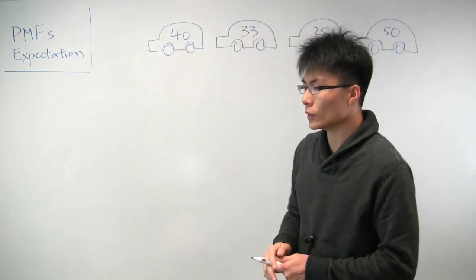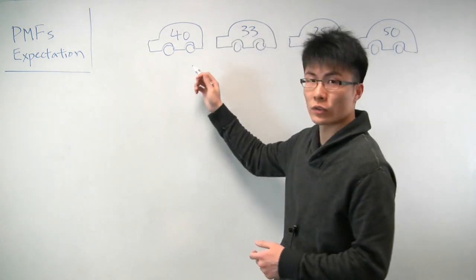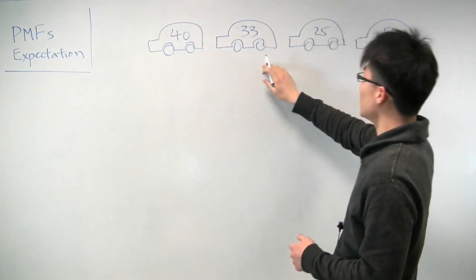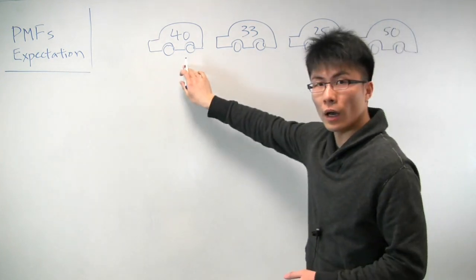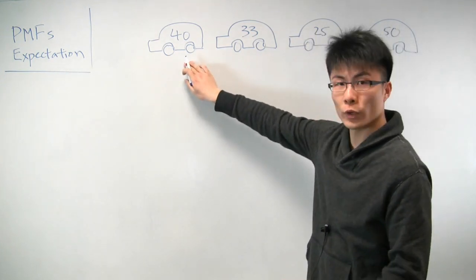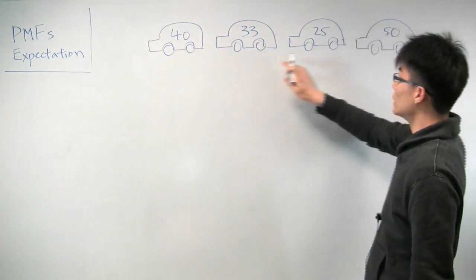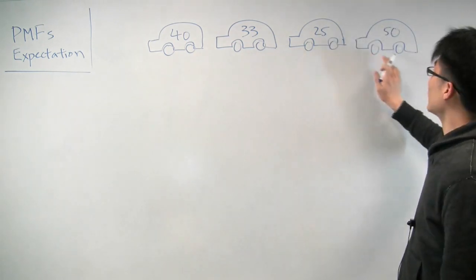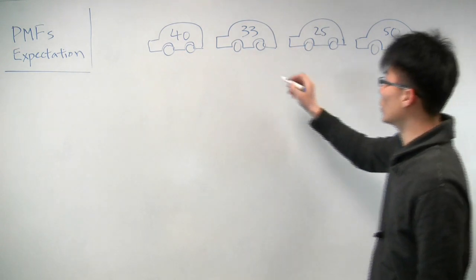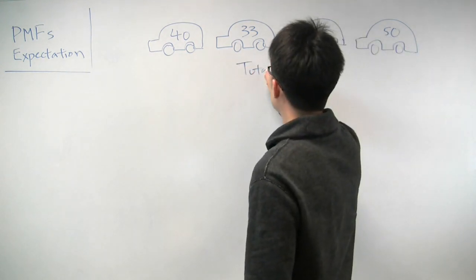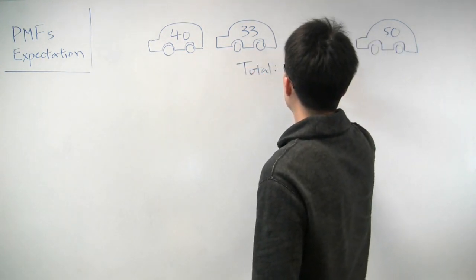The problem specifically deals with four buses of students. We have buses, and each one carries a different number of students. The first one carries 40 students, the second one 33, the third one has 25, and the last one has 50 students, for a total of 148 students.